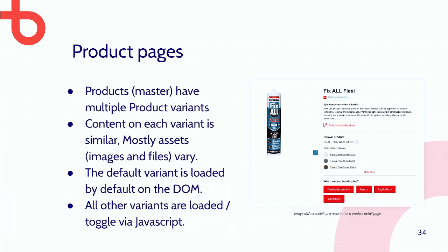We used to have separate detail pages for each and every single product variant, but since there's a lot of content overlap — certainly SEO-wise, if your product descriptions are all the same — we decided to merge them into master pages that load the product variants via JavaScript.